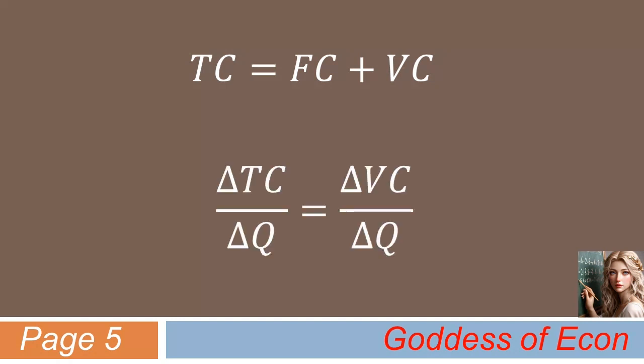What this all implies is that, as the firm increases output, the total cost increases by the amount by which the variable cost increases. So, we can simply ignore the fixed cost part, as it remains the same, regardless of the production level.